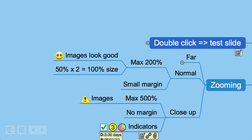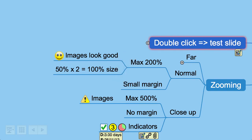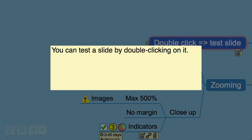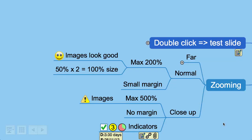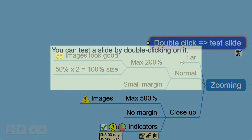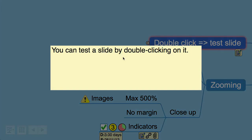If a topic has notes on it, you can show the notes by double clicking on that topic to select it and pressing T, or just click on the notes indicator. To hide the notes, click outside the area where the note is displayed, or type any key. Novamind makes the notes text bigger so that it's readable on a presentation. If the note is too long you can scroll it, and you can also use a mouse or trackpad to select text to highlight it.